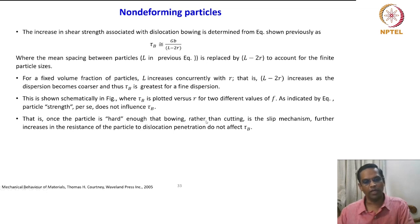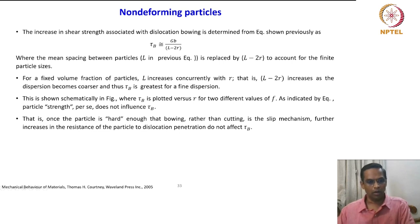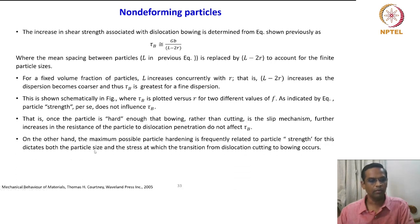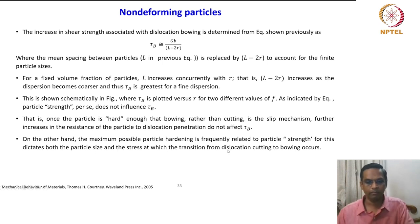The level of τ_b is unaffected by particle strength — once a particle is strong enough to resist cutting, any further increase in its resistance to dislocation penetration has no effect on τ_b, which depends only on the matrix properties and the effective particle spacing. The increase in shear strength associated with dislocation bowing is determined from equations where L is replaced by L minus 2r to account for finite particle sizes. For a fixed volume fraction of particles, L increases concurrently with r, meaning L minus 2r increases as the dispersion coarsens, so τ_b is greatest for the finer dispersion.